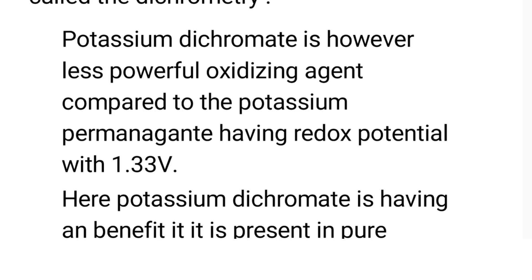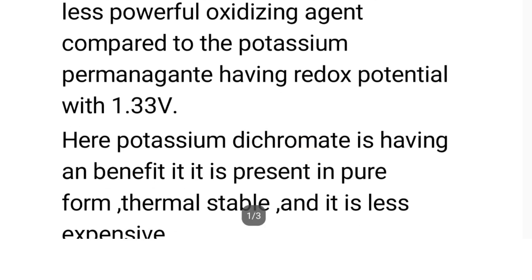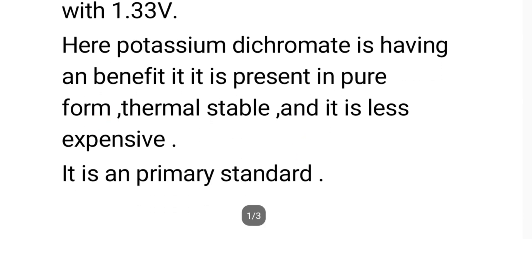Potassium dichromate is, however, a less powerful oxidizing agent compared to potassium permanganate. In the previous video, we talked about permanganate titrations, which is why we use potassium permanganate in those titrations. Potassium dichromate has a redox potential value of 1.33 volts — remember this value.